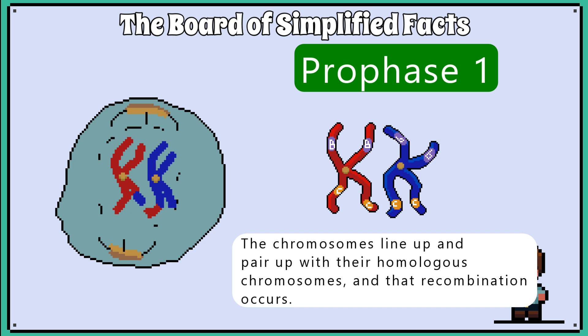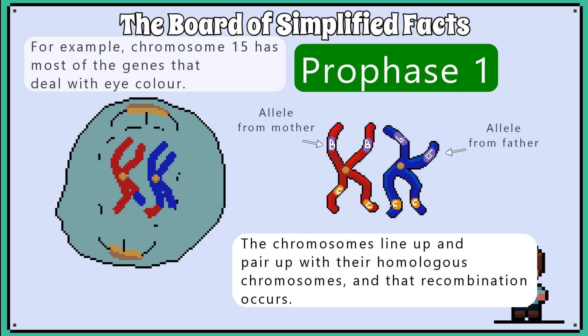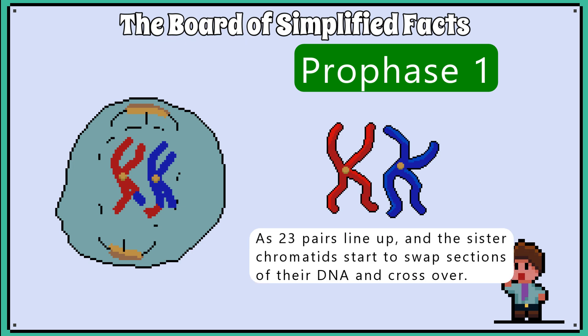Remember, the pairs are one from your mother and one from your father, and they generally contain the same genetic information, just alternative versions of those genes known as alleles. Recombination is when the 23 pairs line up and the sister chromatids start to swap sections of their DNA and cross over. This recombination has now introduced genetic variation in all the potential new four sex cells.